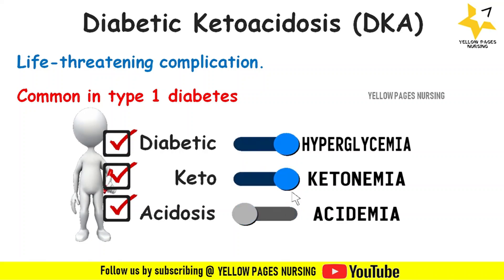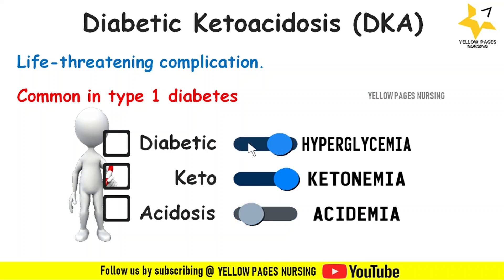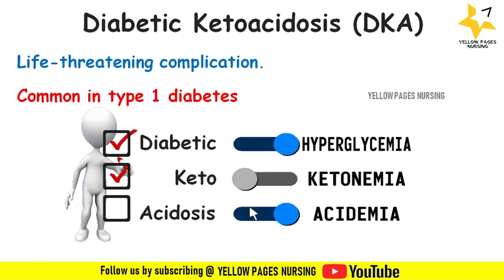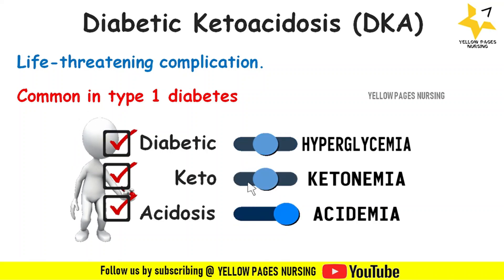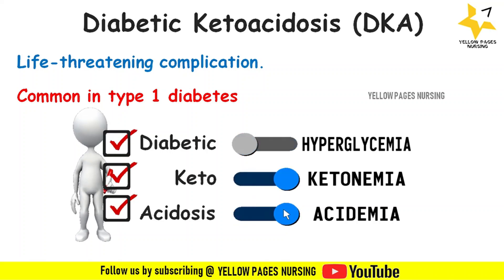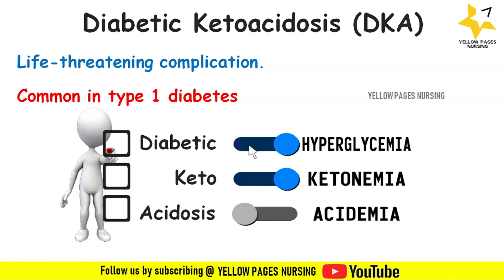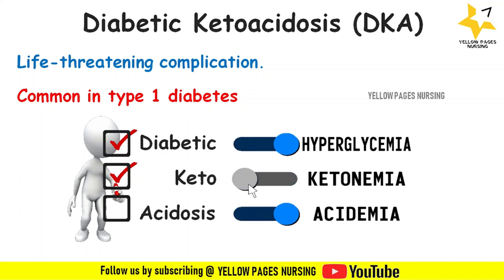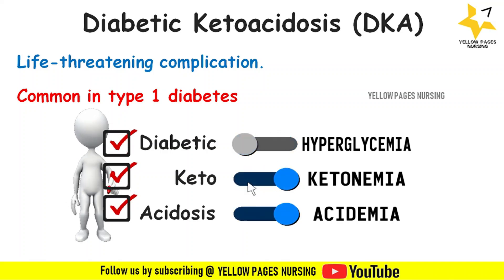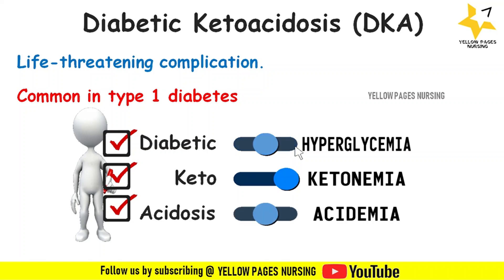Diabetic ketoacidosis, in short called DKA, is characterized by hyperglycemia, ketonemia, and acidemia. This results from disorders in the metabolism of carbohydrate, protein, and fat.